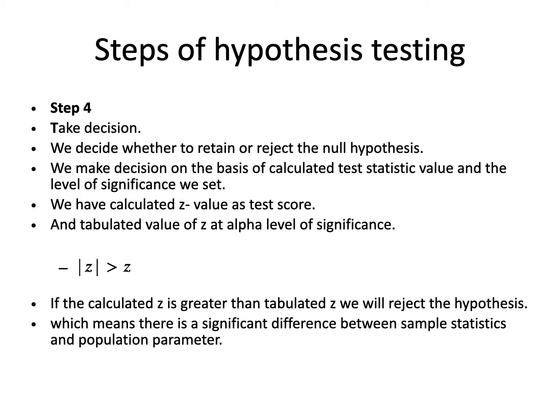In step 4, we take the decision — we will either retain or reject the null hypothesis. The decision is made on the basis of the calculated test statistic value and the level of significance we set. We have the calculated z value and the tabulated z value at the alpha level of significance. If the calculated z is greater than the tabulated z, we reject the null hypothesis, which means there is a significant difference between the sample statistic and the parameter.